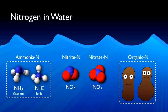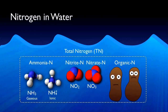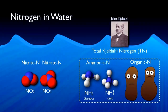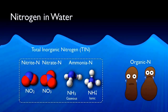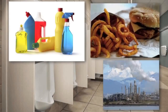A certain amount of organic nitrogen typically cannot be removed through the biological processes described in this video. Total nitrogen, as the name implies, is the sum of all types of nitrogen. TKN, or Total Kjeldahl nitrogen, named after the scientist Johan Kjeldahl, is the sum of only organic nitrogen and ammonia nitrogen. TIN, or total inorganic nitrogen, is total nitrogen minus the organic nitrogen.